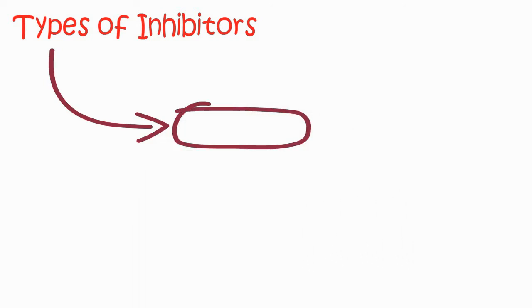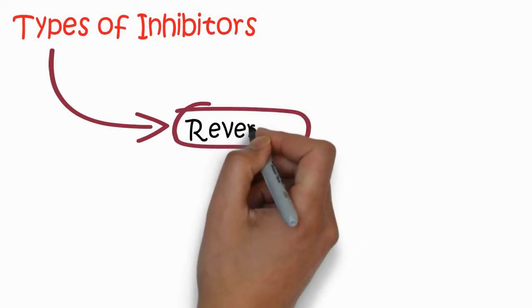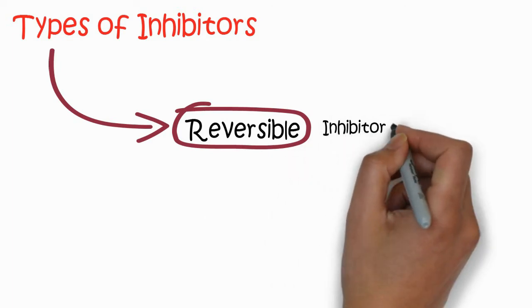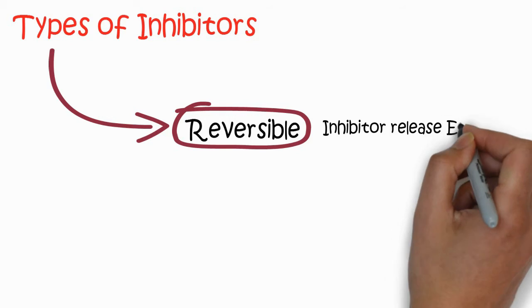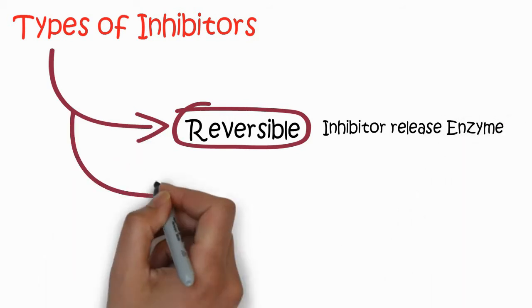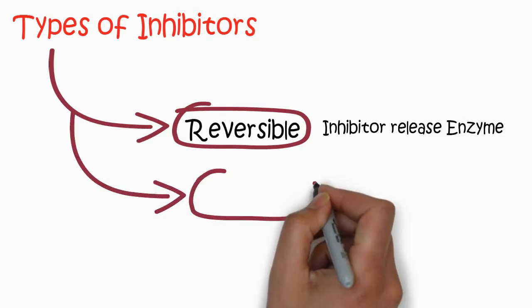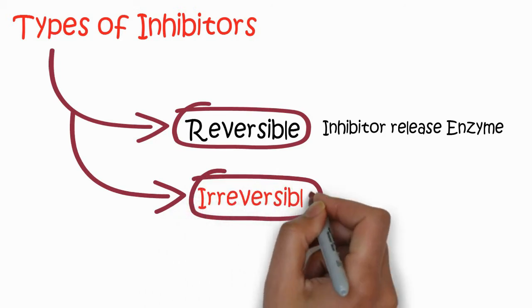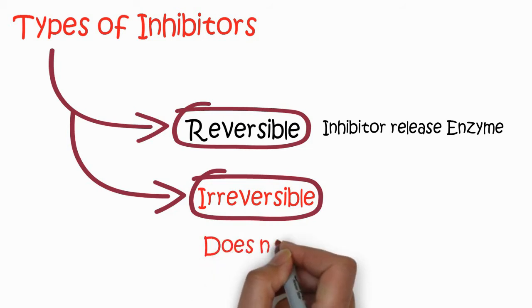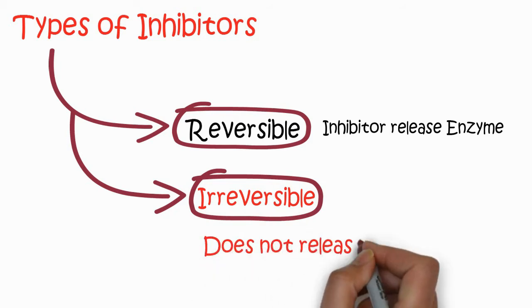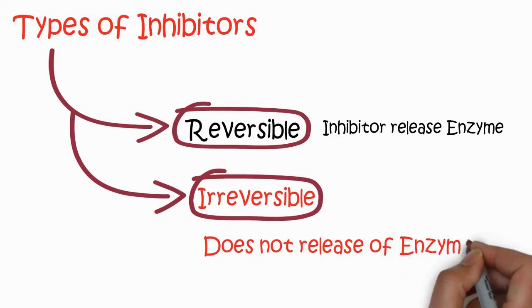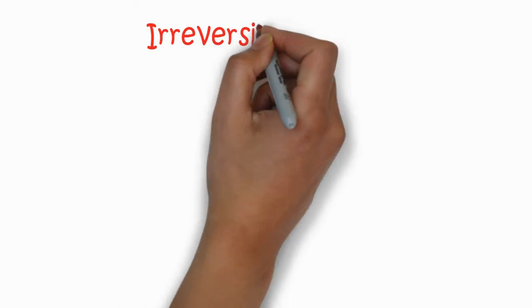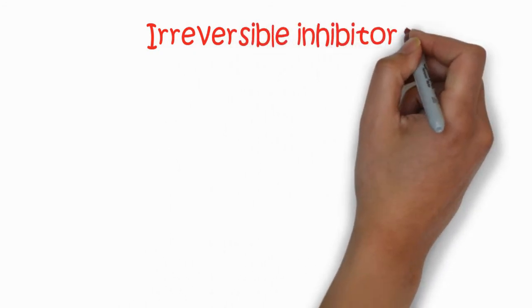There are two main types of inhibitors: reversible inhibition and irreversible inhibition. Reversible inhibition is a type where the inhibitor releases the enzyme back, while irreversible inhibition is the case in which the enzyme is not released back — so it is a kind of permanent inhibition.